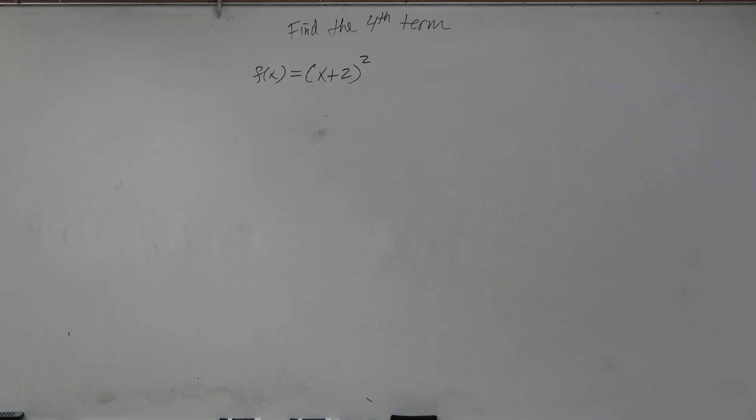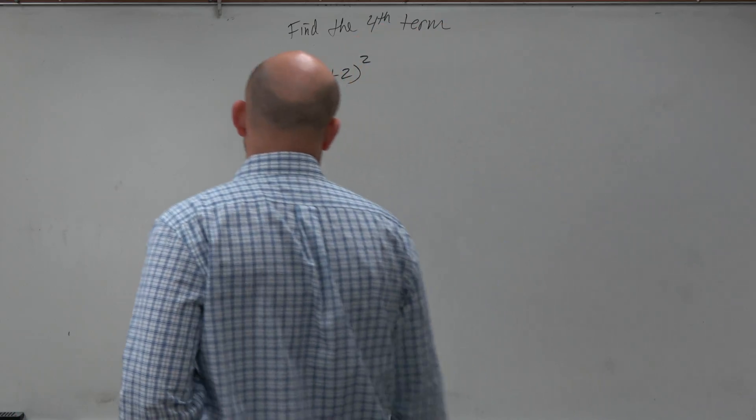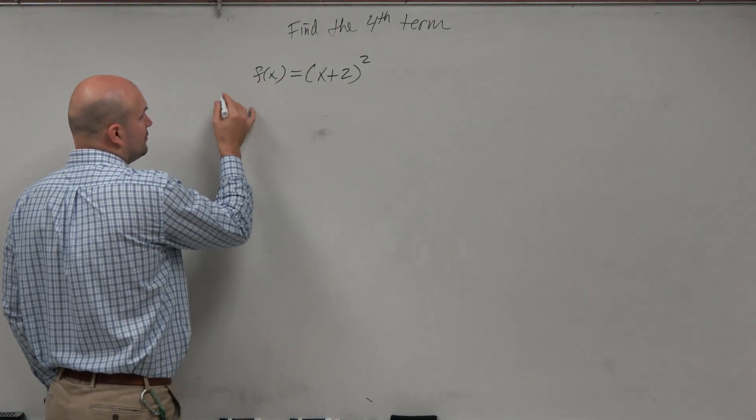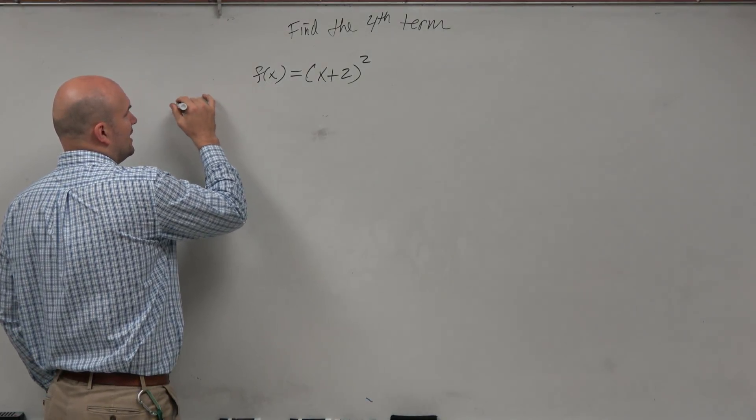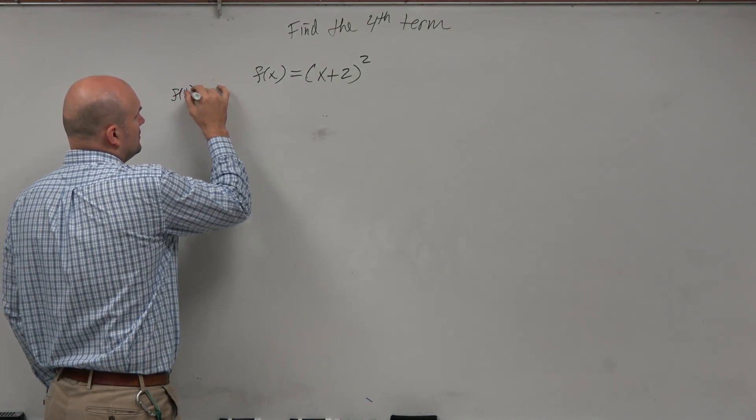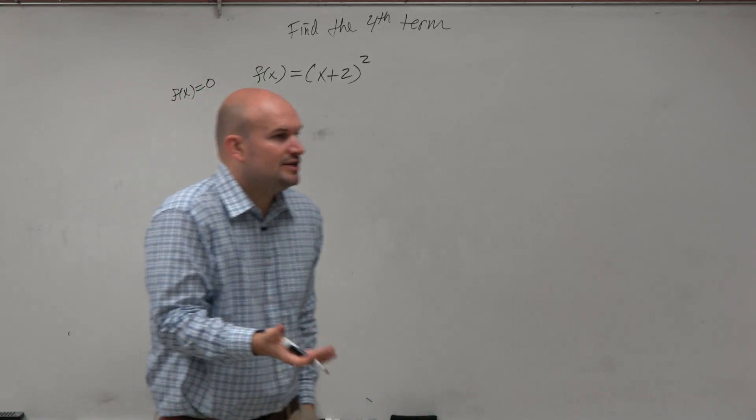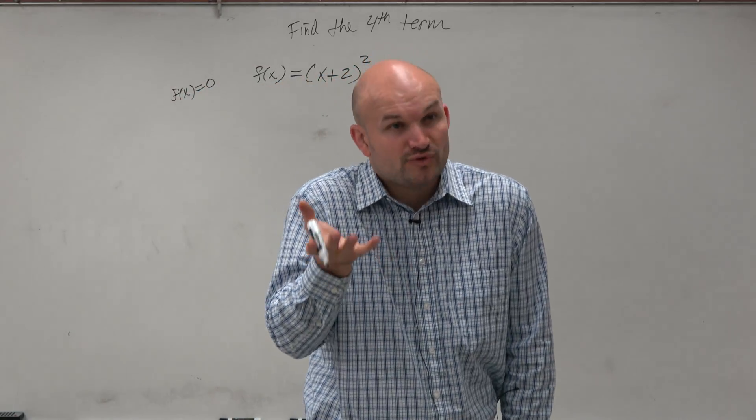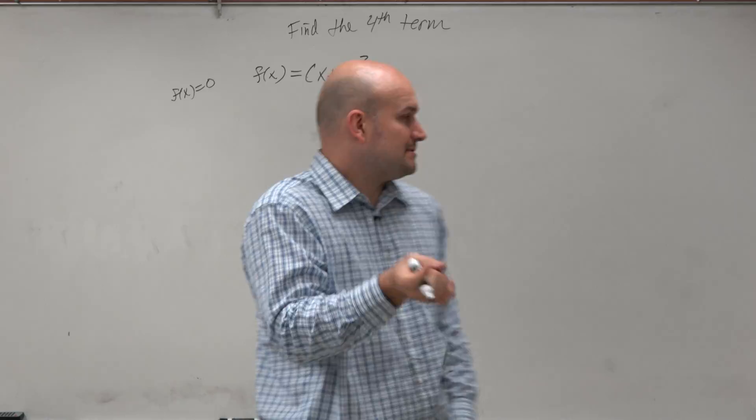So if we want to find these zeros, ladies and gentlemen, remember the zeros are the values of x that make the equation true when f of x is equal to 0. Really, you're finding the x-intercepts. The real zeros are the x-intercepts of the graph.